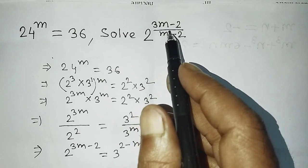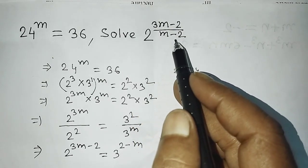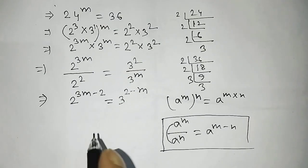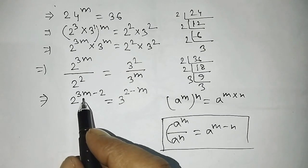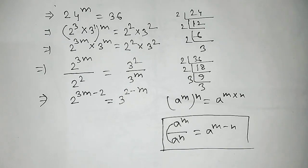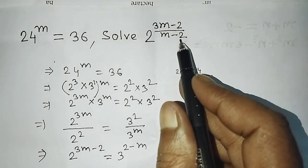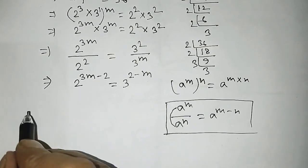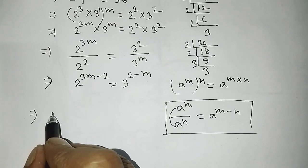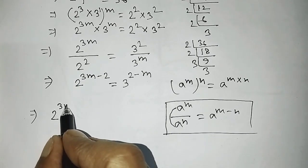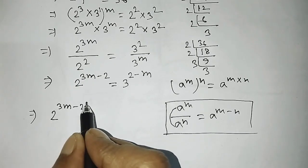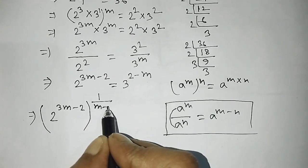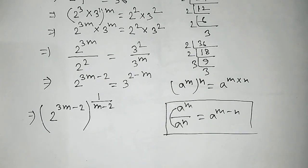After that, look — we need to find the value of 2 to the power 3m minus 2, divided by m minus 2. The power of 2 is 3m minus 2, and in the denominator we have m minus 2. Since there is no denominator currently, it means the denominator is 1. So raise 2 to the power (3m-2), whole to the power 1 over m minus 2.